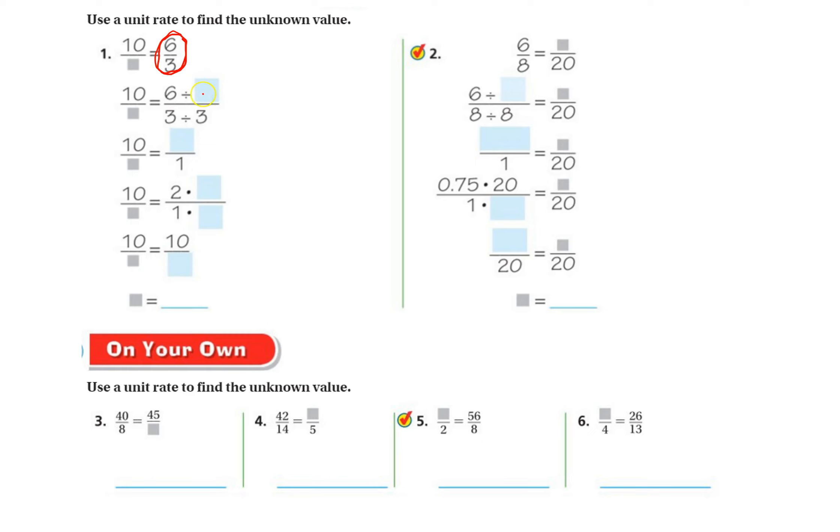So number one, 10 over something equals 6 over 3. So this is the ratio I do have. I have the numerator and the denominator, and that's where we always focus. To get 3 to become 1, I have to do 3 divided by 3. And whatever I divide the denominator by, I have to divide the numerator by the same thing. So 3 divided by 3, that's how we get this 1. 6 divided by 3, that's going to give us 2.